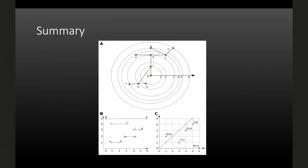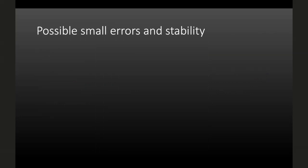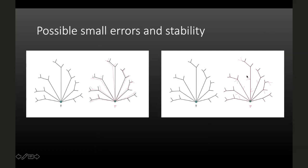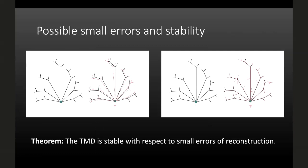When people do digital reconstructions of neurons — a graduate student carefully recording coordinates under a microscope — there are small errors: exact positions slightly off, missed branches, or extra branches noted. We proved a theorem showing that this descriptor is stable with respect to these small errors of reconstruction, the kind that actually show up in lab measurements, so we feel comfortable about that.